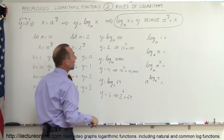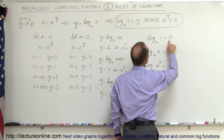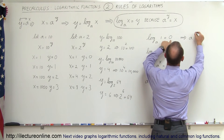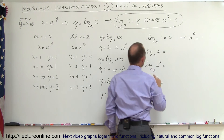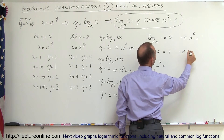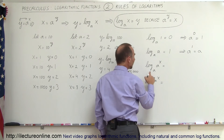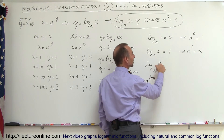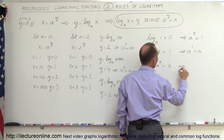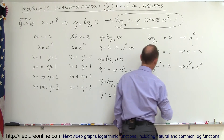The log of base a of 1 is always equal to 0, because a raised to the 0 power equals 1. The log of base a of a equals 1, because a raised to the first power equals a. And the log of base a of a to the x equals x, because a raised to the x power equals a to the x.